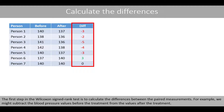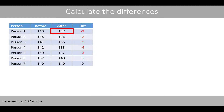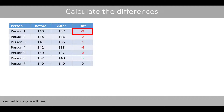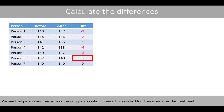The first step in the Wilcoxon Signed-Rank test is to calculate the differences between the paired measurements. We subtract the blood pressure values before the treatment from the values after the treatment. For example, 137 minus 140 is equal to negative 3. Person number 6 was the only person who increased the systolic blood pressure after the treatment.